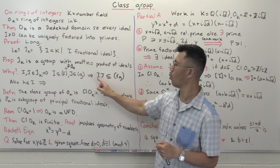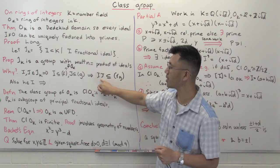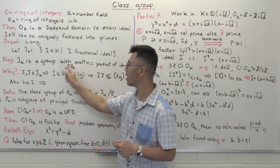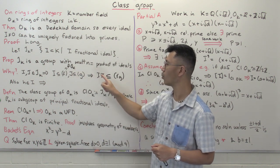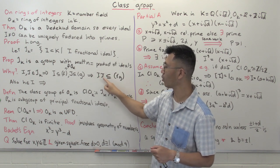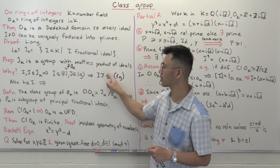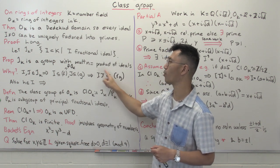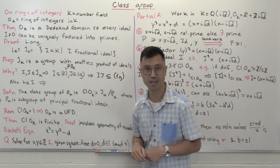We want this to be a group, so let's identify the identity element. The identity element is just the fractional ideal Ok itself. If you multiply Ok with some ideal j — since Ok contains 1, you get all of j; and since j is an Ok-module, it's closed under scalar multiplication by Ok, so you don't get anything more than j. So multiplication by Ok doesn't change anything — it's the identity in this group.